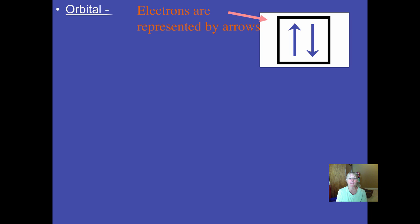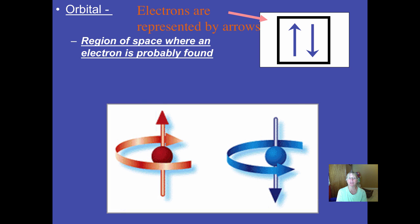Now one way you can try to represent an orbital, a region of space where there's a high probability of locating an electron, is by drawing little boxes. It's kind of pathetic. Sometimes we don't even draw boxes. We just draw the line on the bottom. But either on top of a line or within a box, an up and a down arrow represent electrons.